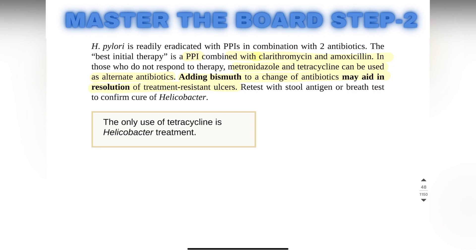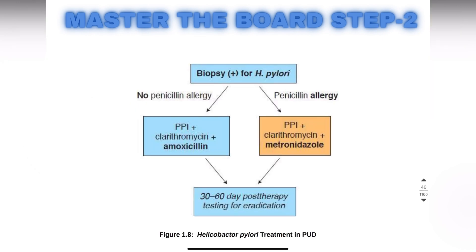The PPIs are combined with clarithromycin and amoxicillin. If this therapy does not respond, then metronidazole and tetracycline can be used as alternative antibiotics. Adding bismuth to a change of antibiotic may aid in resolution of treatment-resistant ulcers.